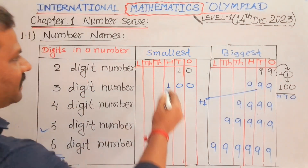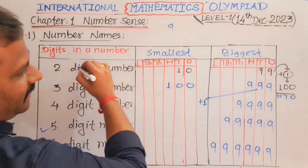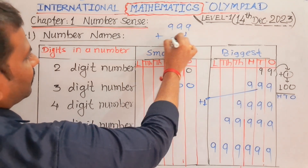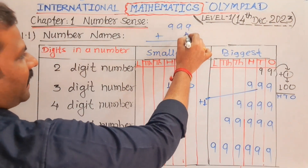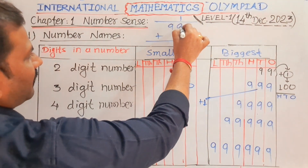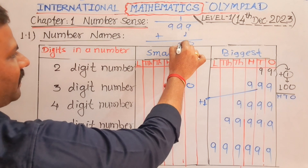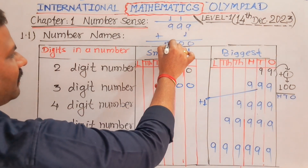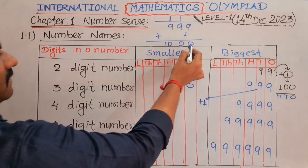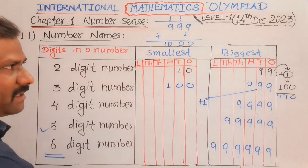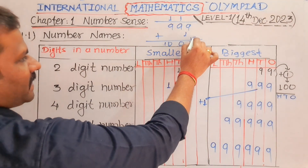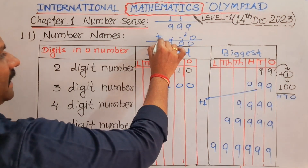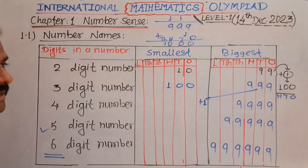Let us write 999 plus 1 and do the addition. 9 and 1 is 10, write 0 and carry over 1. 9 and 1 is 10, write 0 and carry over 1. 9 and 1 is 10. Now count the digits: 1, 2, 3, 4 — a 4-digit number. Units place, tens place, hundreds place, and thousands place. Is that clear? So when you add 1 to the biggest 2-digit number, you get a 3-digit number.